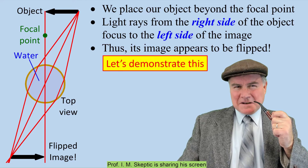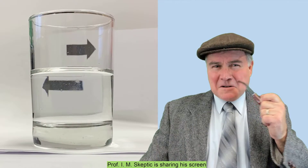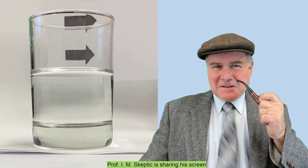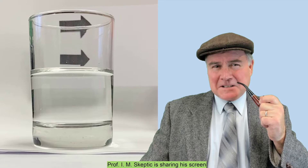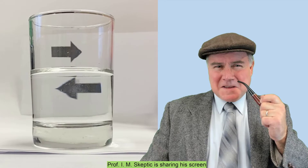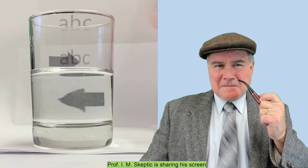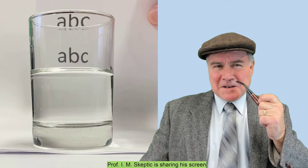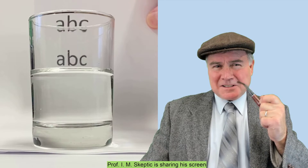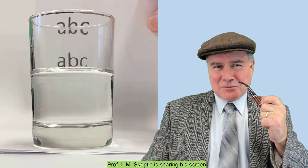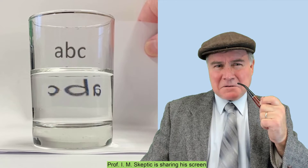Let's demonstrate this. First, I'll use an arrow. When you look through the glass by itself, you see the arrow in the right orientation. But when you look through the water, it appears backwards. I'll use an ABC to also illustrate this. Notice that it looks okay through the glass, but through the water, it's backwards.